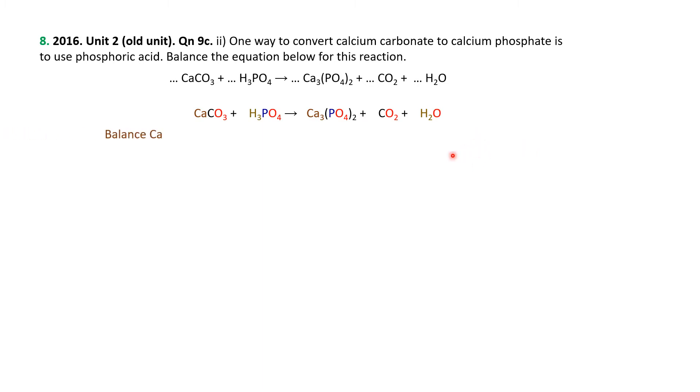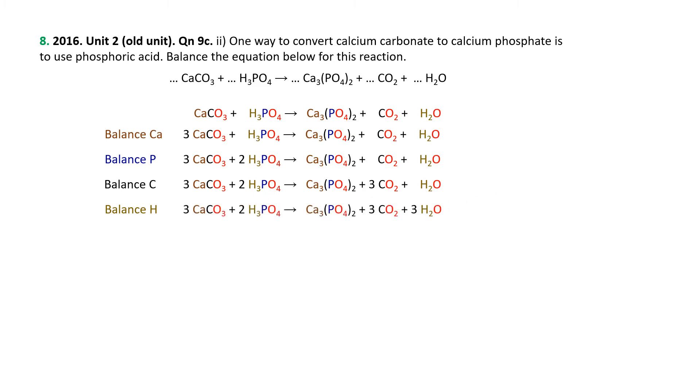So start with the calciums. We got one on the left, three on the right. So we need three on the left. So we need three of these calcium carbonates there. Next one we hit, maybe the phosphorus. We got one phosphorus there. We got two phosphoruses there. So we need two of the H3PO4s. Now we can do the carbons. We got three here. We want three over there. So we've got to have three CO2s. Could have done the carbons before the phosphorus. Whichever way floats your boat, depending how you're thinking. Let's look at the hydrogens. Now we've got six on the left right now, two on the right. How do we turn two into six? We'll just need three waters.